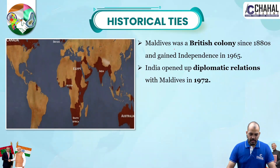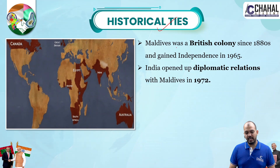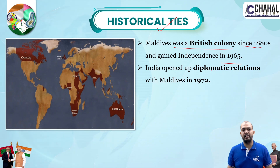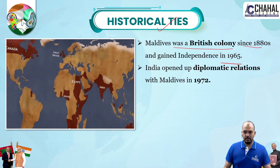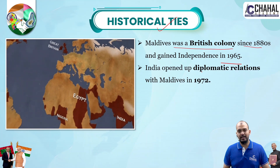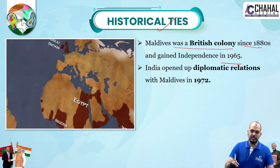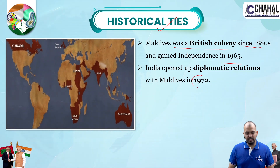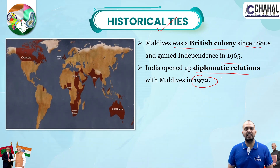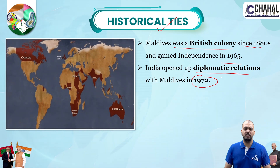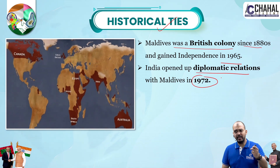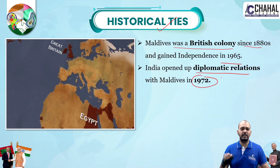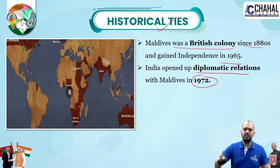Let's start with historical ties. We know that Maldives was a British colony from 1880 to 1965. India got its freedom in 1947, and at least 18 years later, our southern neighbor Maldives also saw the British withdraw, becoming an independent nation. Within seven years of Maldivian independence, India started diplomatic relations with Maldives, meaning we opened embassies, enabling exchange of diplomatic officers for cooperation and coordination.